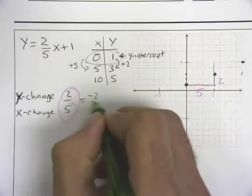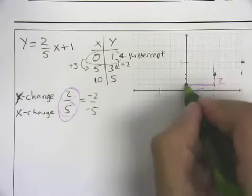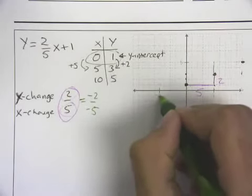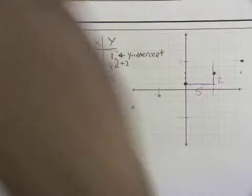Well, that makes sense to us because we know that this ratio is also equal to negative 2 over negative 5. If I do that, negative 2 over negative 5, negative 2 over negative 5, negative 2 over negative 5.